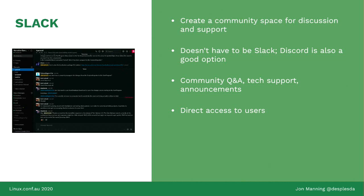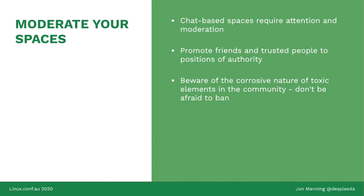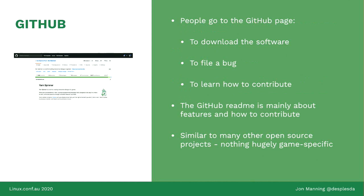We use Slack for community Q&A, tech support, announcements, and primarily to give us direct access to users in reverse as well. Any kind of chat-based space requires attention and moderation — it is work to run this kind of stuff. It's important to promote trusted people to some position of authority. It's also really important to be aware of the corrosive nature of toxic elements in the community — you should not be afraid to ban people, because they are silencing people who are not toxic. The GitHub is largely the central development hub: people go there for downloads, to file bugs, and to learn how to contribute.